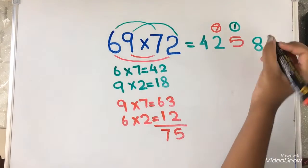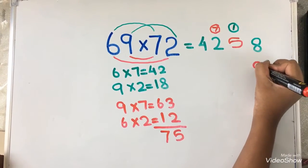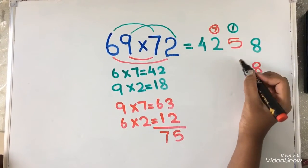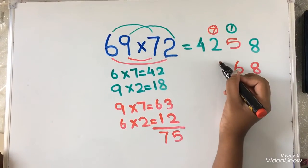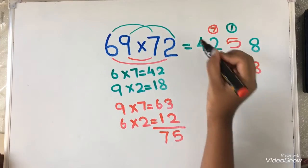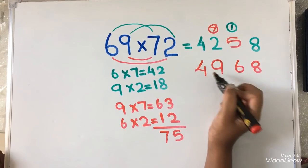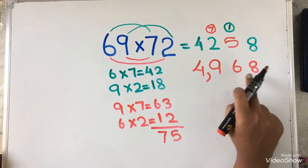Come on. Now, let's add it. 8. 1 plus 5 equals to 6. And 7 plus 2 equals to 9. And 4. The answer is 4968.